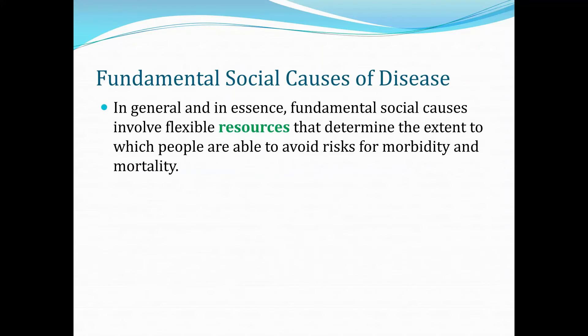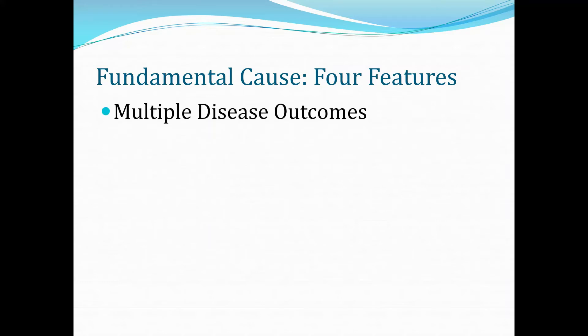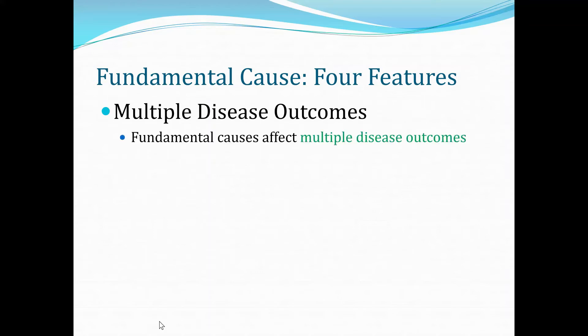In essence, fundamental social causes involve flexible resources that determine the extent to which people are able to avoid risks for morbidity and mortality. There are four features of this theory. The first is that a single fundamental cause can affect multiple disease outcomes.